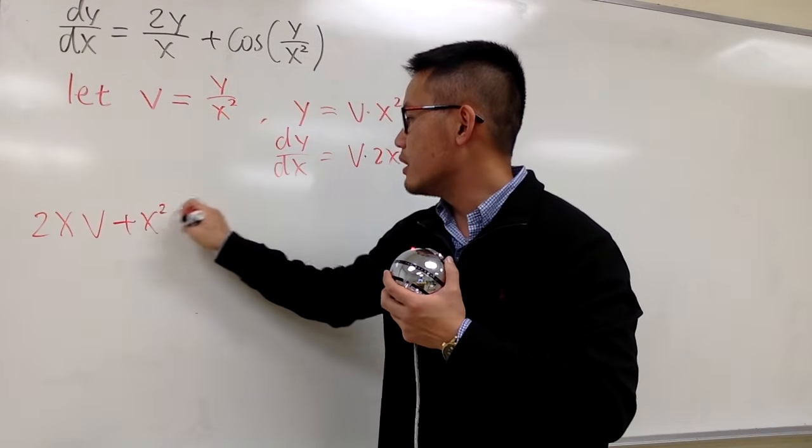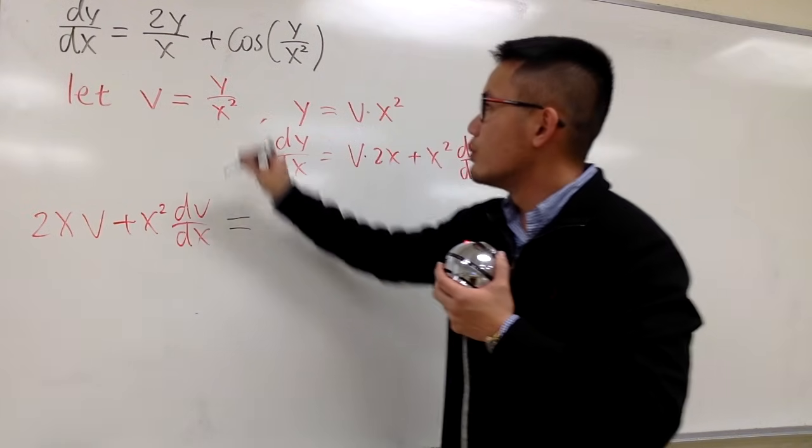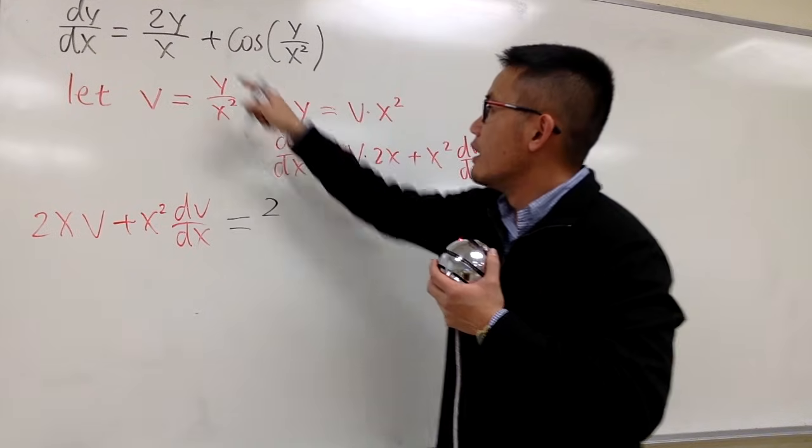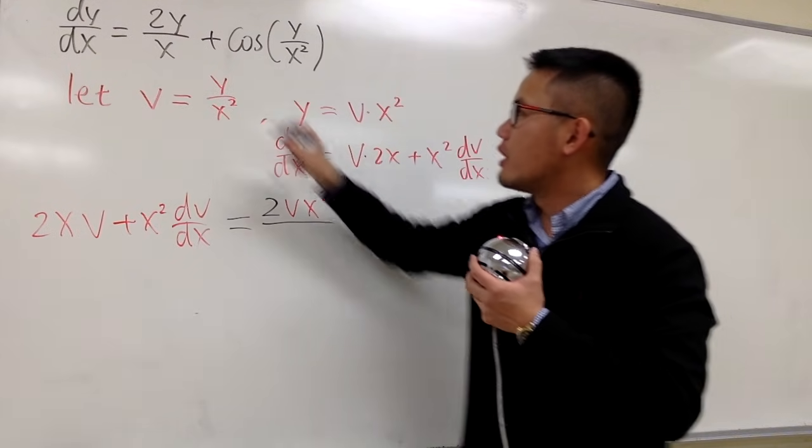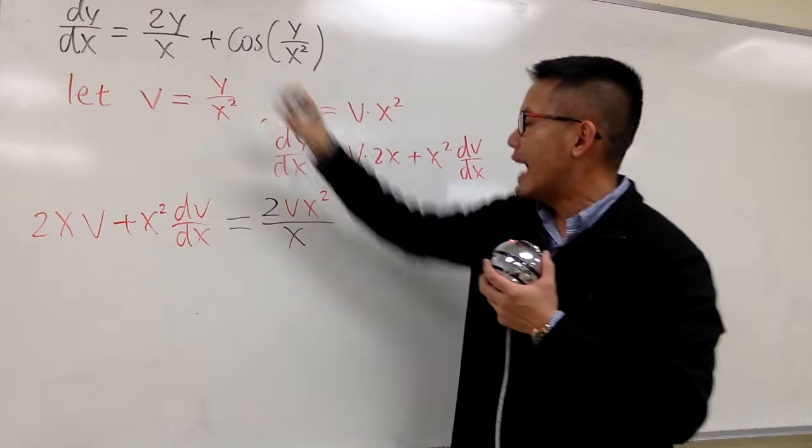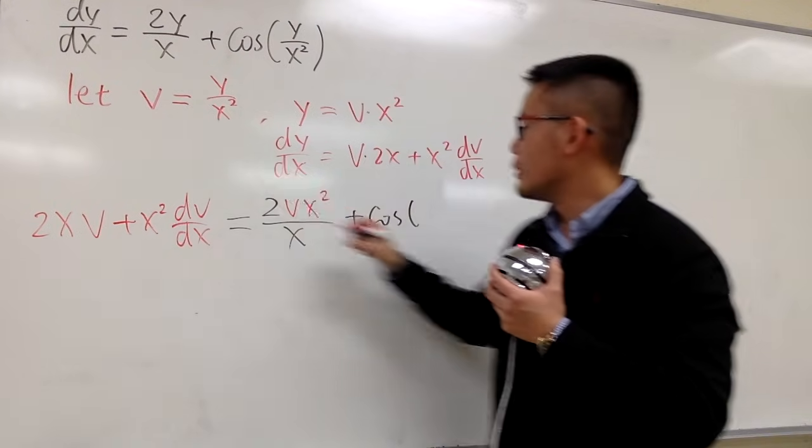So let me rewrite this better for you guys. Right here, we will have 2xv, and then we add it with this, plus x squared dv/dx, right? And this will be equal to 2 is still the 2 on the top. This y is the same as vx squared over the x that we have, and then we add it with cosine, and the input there is the v that we have.